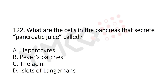Now Question 122: What are the cells in the pancreas that secrete pancreatic juice called? Option A: hepatocytes, Option B: Peyer's patches, Option C: acini, Option D: islets of Langerhans. The answer is Option C: acini.